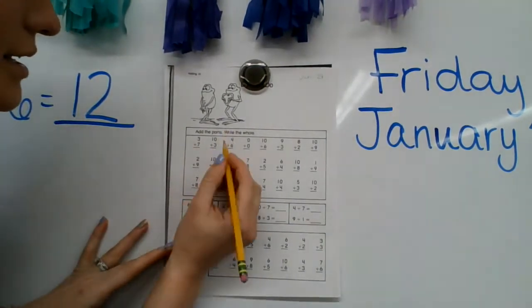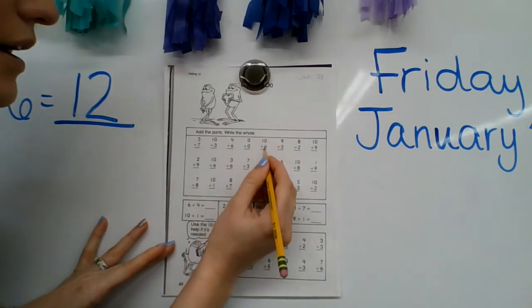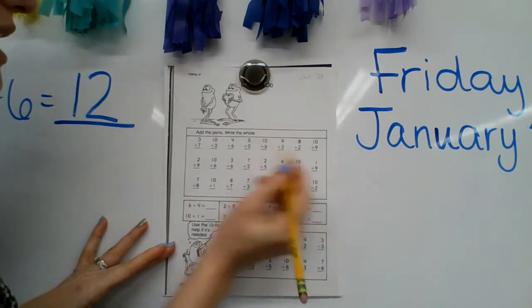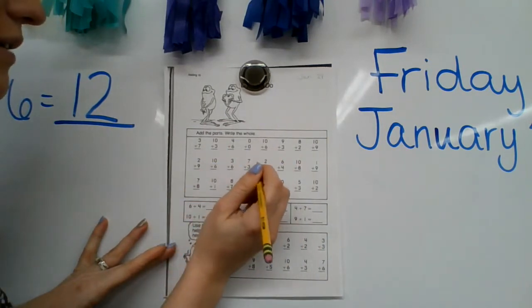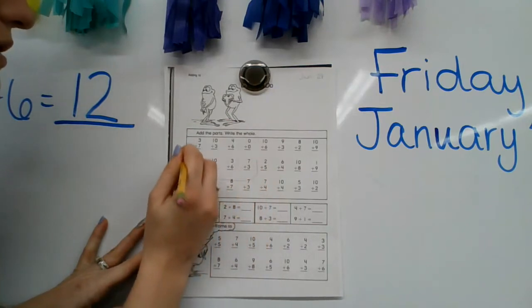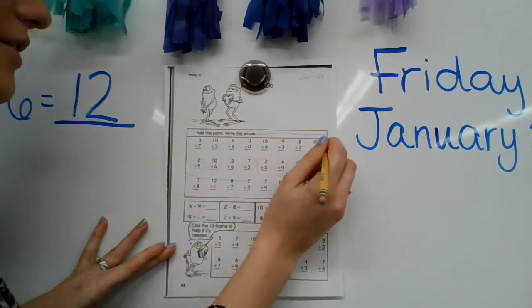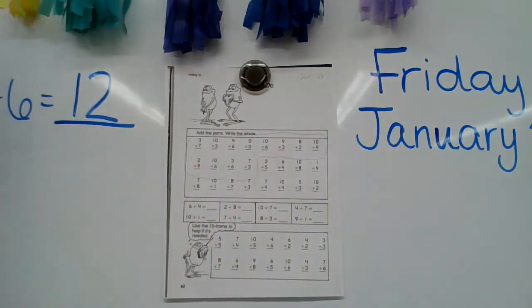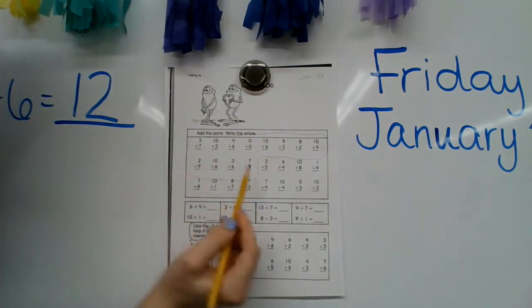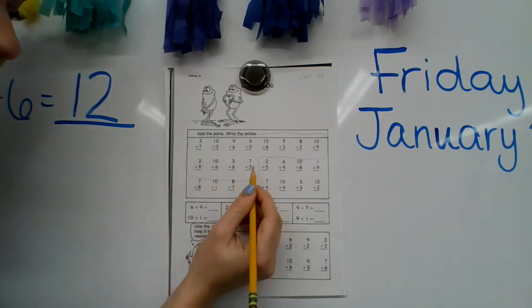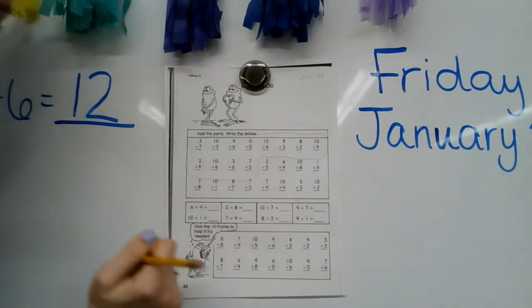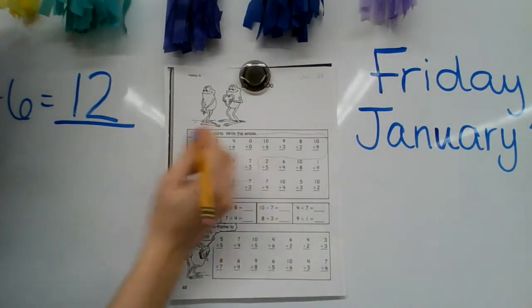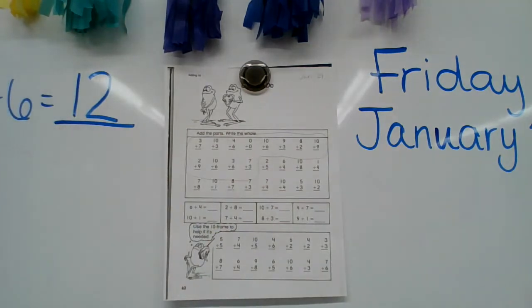So we're going to do 1, 2, 3, 4, 5, 6, 7, 8, 9, 10, 11, 12. We are going to do these problems together. Can you circle those problems like me? We started up here at 3 plus 7 and our last one's going to be 7 plus 3. It's just the turnaround of that one. So circle those 12 problems. Those are the ones that we are going to do together.